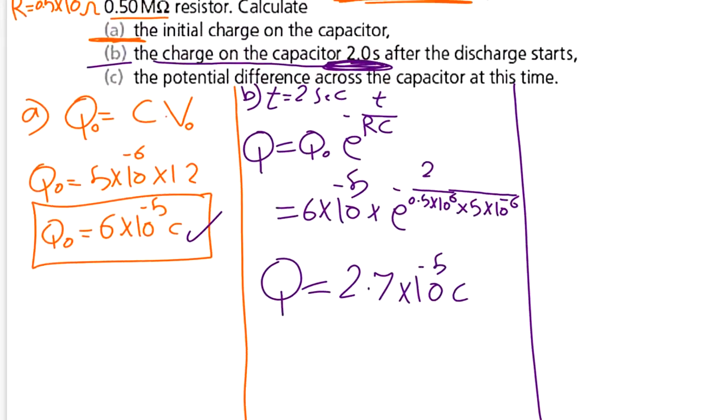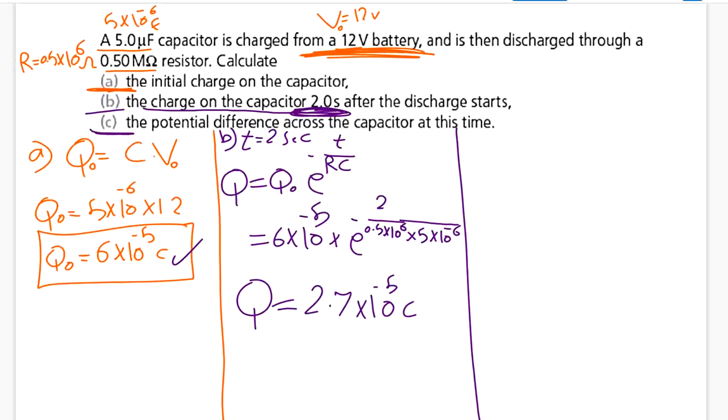Part C: they want the potential difference across the capacitor at this time. They need the V, the potential difference. What do they mean by 'at this time'? It means after 2 seconds. I can find the V in 2 ways.